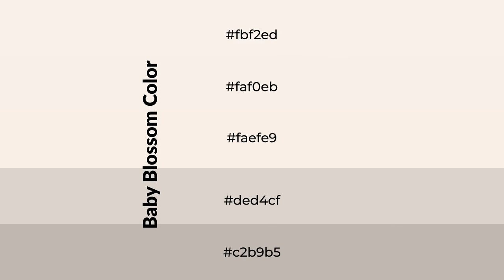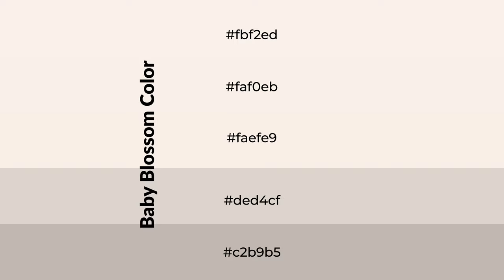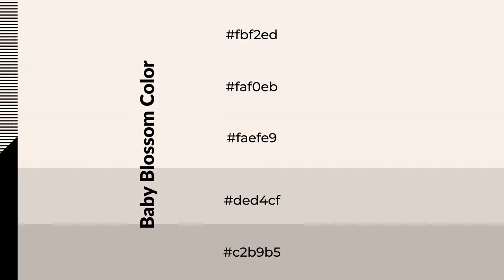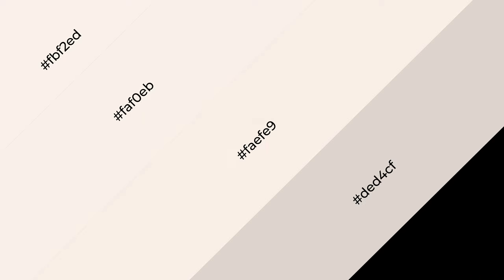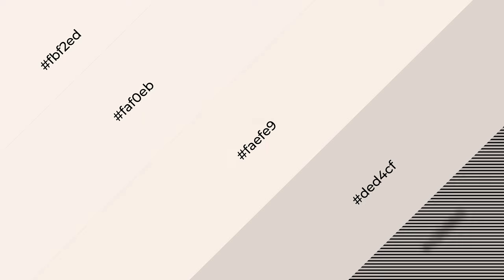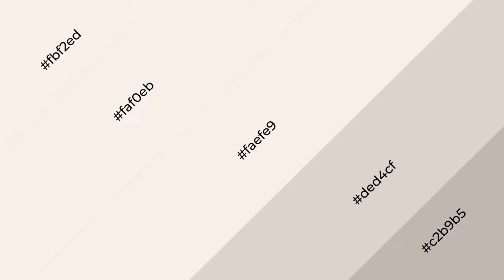To generate shades of a color, we add black to the color, and it is used in patterns and 3D effects. Layers and shades create depth and drama. Baby blossom is a warm color and it emits cozier and active emotions.